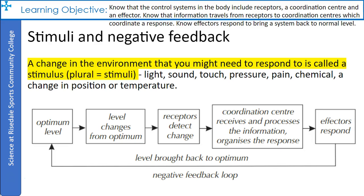A change in your environment that you might need to respond to is called a stimulus — the plural is stimuli. A stimulus can be light, sound, touch, pressure, pain, a chemical, or a change in position or temperature. The receptors of an automatic control system detect a stimulus. When the level of something — for example water or temperature — is too high or too low, they send this information to the coordination center, which processes the information and organizes a response from the effectors.